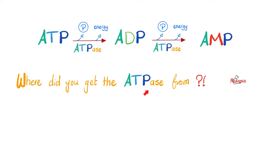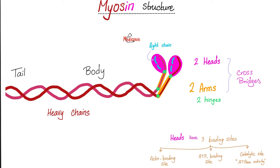Where does the muscle get ATPase from? It's literally inside the muscle. Specifically, it's in the myosin — in the heads of myosin. The heads of myosin contain an actin-binding site to bind with actin, an ATP-binding site to bind to ATP, and then a catalytic site with ATPase activity to break down the ATP. 'Myo' means muscle and 'in' means protein — it's the protein of the muscle. I've discussed actin and myosin in great detail in my muscle physiology playlist.